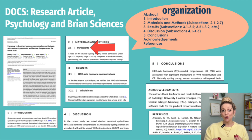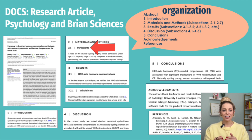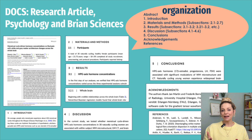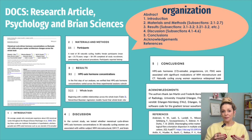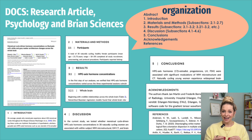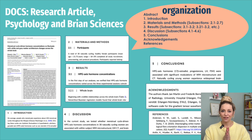For example, in section two, Methods and Materials, subsection 2.1 focuses just on the participants. Depending on your field and the type of writing you are doing, the organization might change a little bit. So it's really important to collect models of the type of writing you are doing and analyze them so you can mimic their genre conventions.